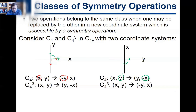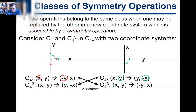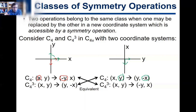In the alternate coordinate system under C4³: the X vector spins 270 degrees and maps to negative-Y, and the Y vector spins 270 degrees and maps to X. Now look at what happens: C4 in the alternate system gives (X,Y) → (Y, −X), which matches exactly what C4³ gave in the original system. And C4³ in the alternate system gives (X,Y) → (−Y, X), which matches C4 in the original system.